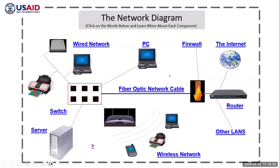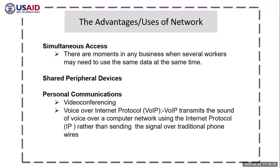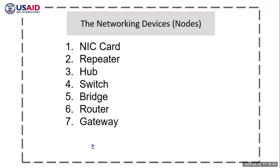The whole components inside our network — if you take this course, you will have to understand each and every component of what's connected. We need to have shared peripheral devices, and nowadays we also use Voice over Internet Protocol, so hard phones in offices are also digital and have IP addresses. The basic devices to understand are the NIC card, the repeater, the hub, the switch, the bridge, the router, and the gateway.